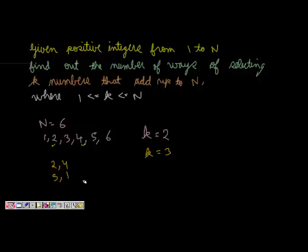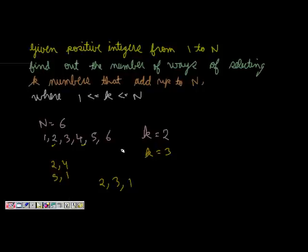Similarly, if k is equal to 3, do 3 numbers add to 6? I can have something like 2, 3, and 1, which add up to 6. So this is the problem: find out the number of ways of selecting k numbers from 1 to n — they should be unique — such that they add up to n.